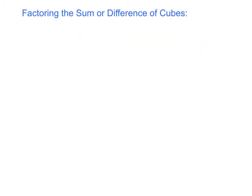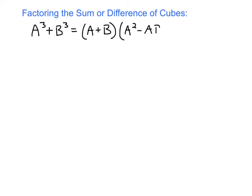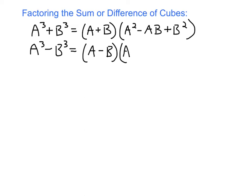Next, factoring the sum or difference of cubes. For the sum of two cubes, a³ + b³ factors into (a + b)(a² - ab + b²). For the difference of two cubes, a³ - b³ factors into (a - b)(a² + ab + b²).